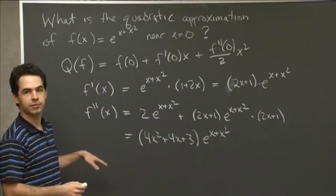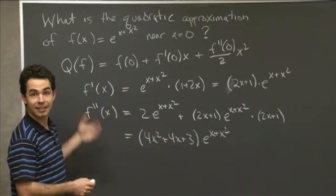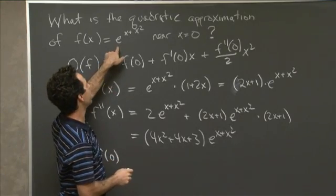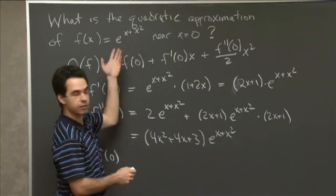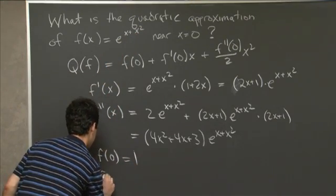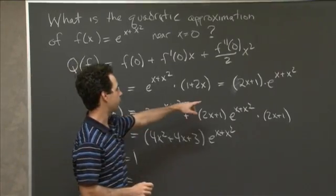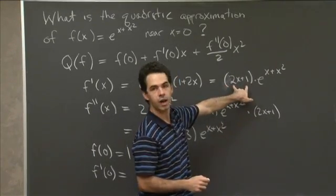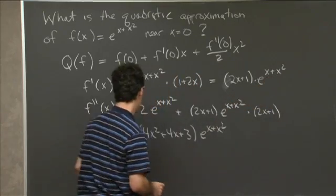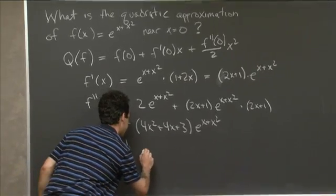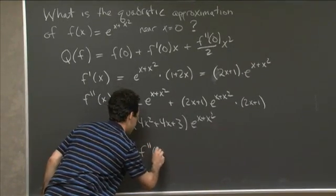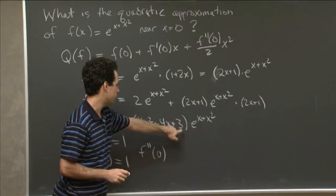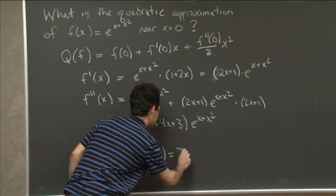So these are the first and second derivatives, and what I need to plug them into my formula is I need their values at 0. So I need the function value at 0. So f(0), well that's e^(0+0²), so that's e^0, so that's just 1. f'(0), let's see, I go over to my formula for f', and I plug in x equals 0. So I have 2 times 0 plus 1, so that's 1 times e^0, so that's 1 times 1, that's also 1. And for f''(0), I go to my formula for f'', and I put in 0, and so this is 0 and that's 0, so I have a 3 times 1, so that's 3.